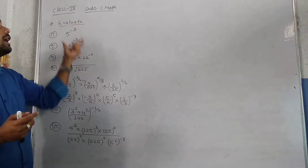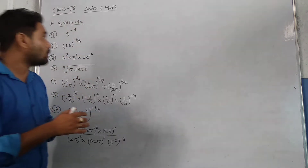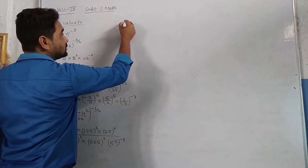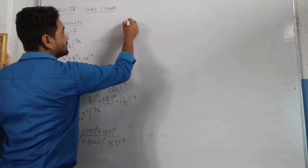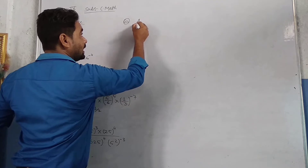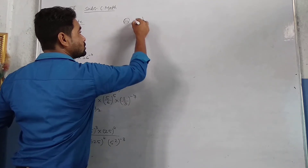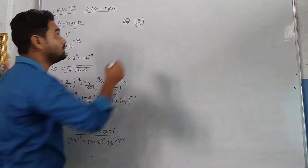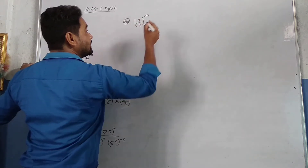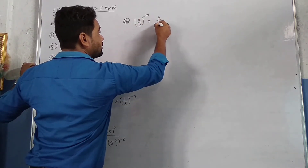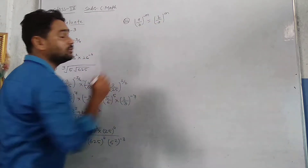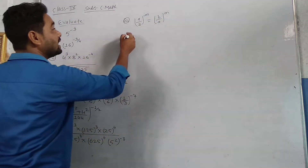That means we are going to evaluate. For the eighth law, it is given that if the base is A upon B, and the power is minus M, then B upon A, whole power M will be the result. This is the eighth law.